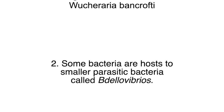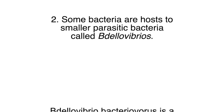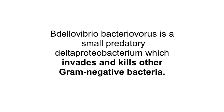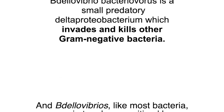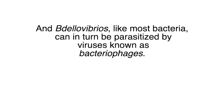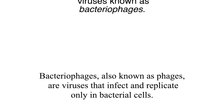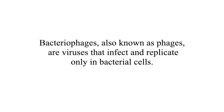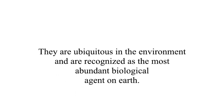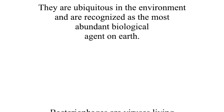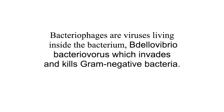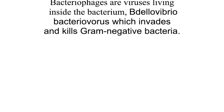Some bacteria are host to smaller parasitic bacteria called Bdellovibrios. Bdellovibrio bacteriovorus is a small predatory delta-proteobacterium which invades and kills other gram-negative bacteria. And Bdellovibrios, like most bacteria, can in turn be parasitized by viruses known as bacteriophages — viruses that infect and replicate only in bacterial cells. They are ubiquitous in the environment and are recognized as the most abundant biological agent on earth.